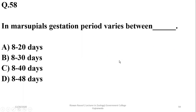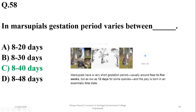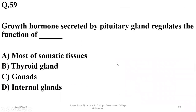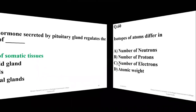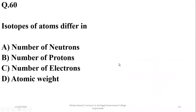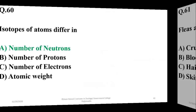Question 58: In marsupials, the gestation period varies between 8 to 40 days, up to 40 days in some larger marsupials such as kangaroos. Question 59: Growth hormone secreted by the pituitary gland regulates the function of most somatic tissues — A. Question 60: Isotopes of atoms differ in number of neutrons and atomic mass as well, so A is the right answer.